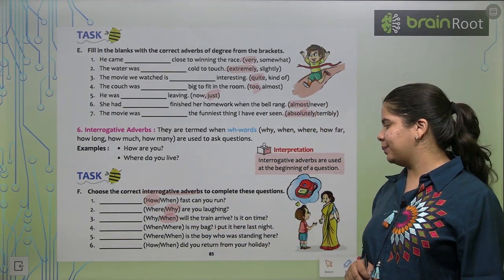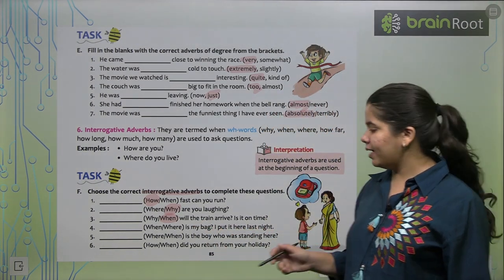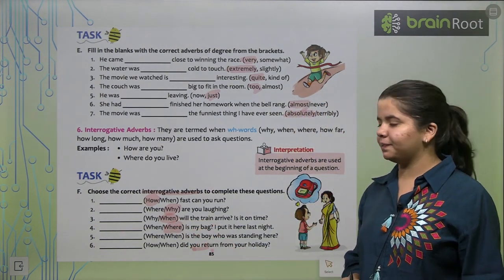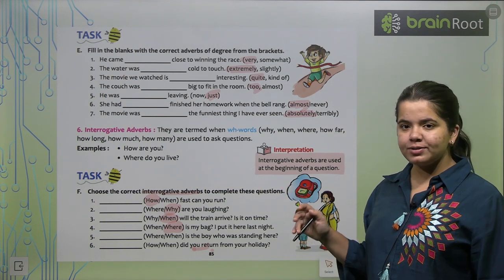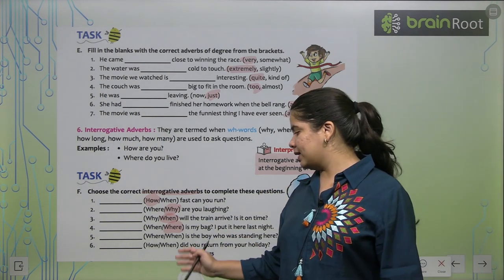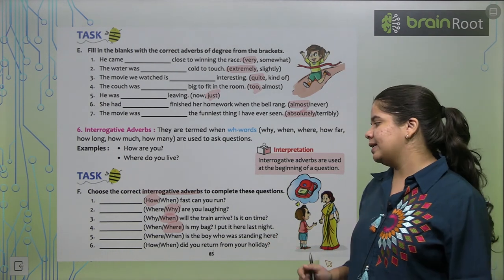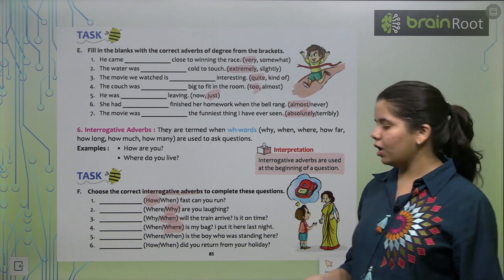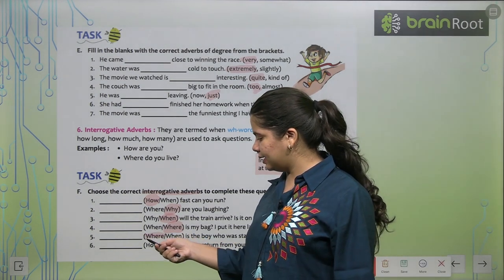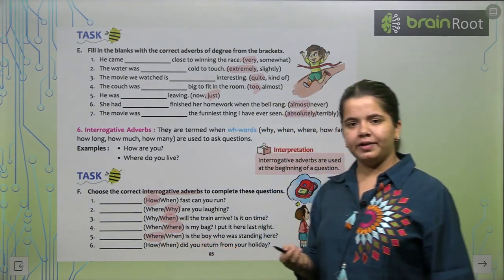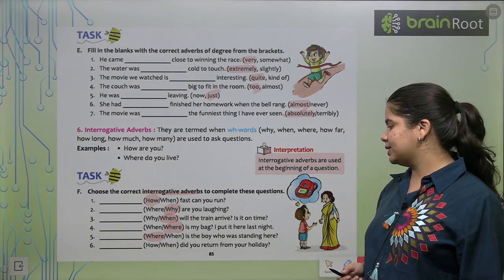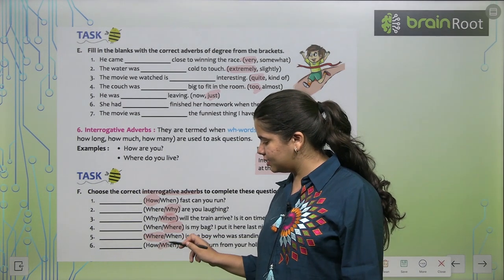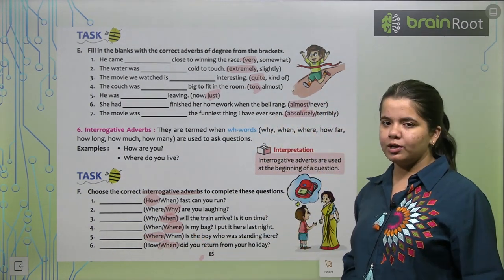Where is my bag? I put it here last night. So when in my bag cannot be. What should we write? Where is my bag? I put it here last night. Next, where is the boy who was standing here? Right? Next, when did you return from your holiday? When did you return from your holiday? So this is when here. So I hope this is also clear.